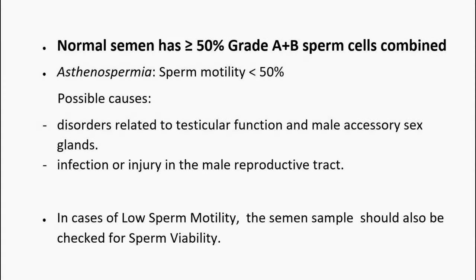Normal semen contains at least 50% grade A plus B sperm cells combined. Low sperm motility of below 50%, also known as asthenospermia, can be a symptom of disorders related to testicular function and male accessory sex glands. It could also be a sign of infection or injury in the male reproductive tract. In cases of reduced sperm motility, the semen sample could also be checked for sperm viability.